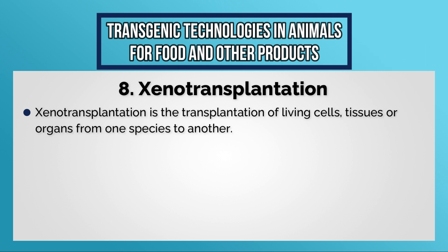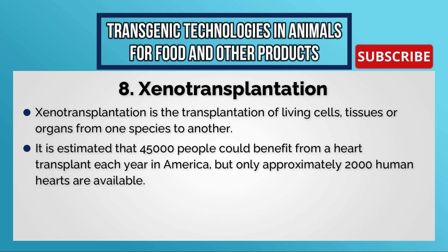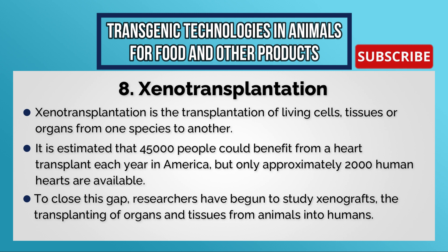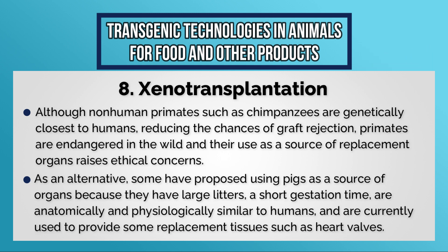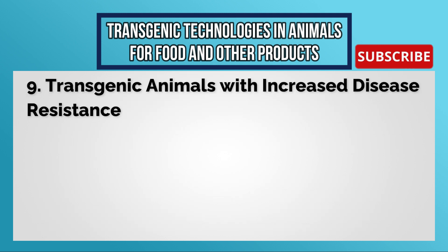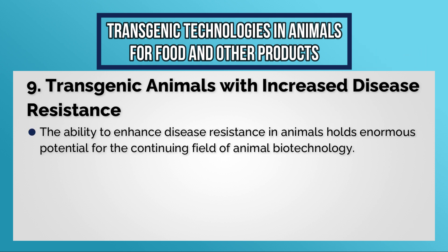Xenotransplantation is the transplantation of living cells, tissues, or organs from one species to another. It is estimated that 45,000 people could benefit from a heart transplant each year in America, but only approximately 2,000 human hearts are available. To close this gap, researchers have studied xenografts — transplanting organs and tissues from animals to humans. Although non-human primates such as chimpanzees are genetically closest to humans, reducing the chances of graft rejection, primates are endangered in the wild and their use raises ethical concerns. As an alternative, pigs have been proposed as a source of organs because they have large litters, a short gestation time, are anatomically and physiologically similar to humans, and are already used to provide replacement tissues such as heart valves.